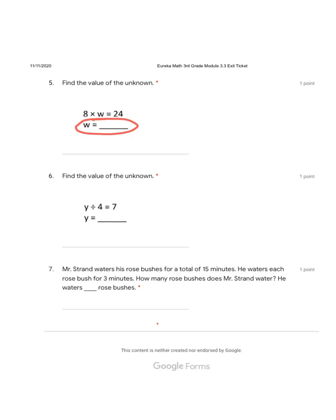Okay, 8 times blank equals 24. If you don't know this fact, this multiplication fact, you can also divide. This is the same as 24 divided by 8 equals blank. And that is 3, because 8 times 3 equals 24, 8, 16, 24. You just count 8 three times. So W equals 3.